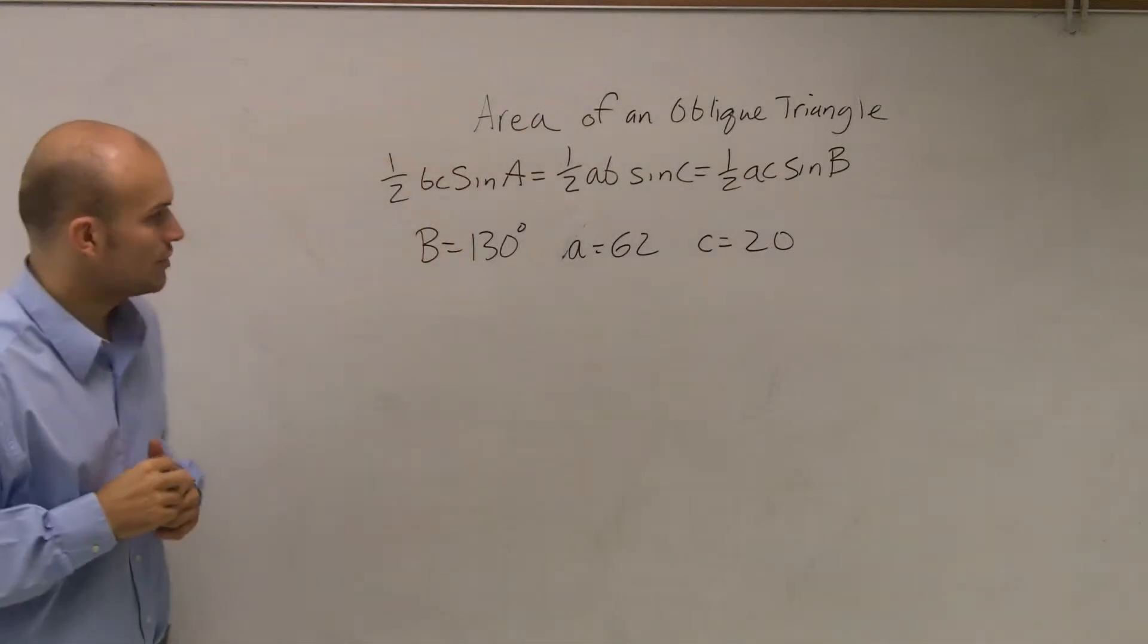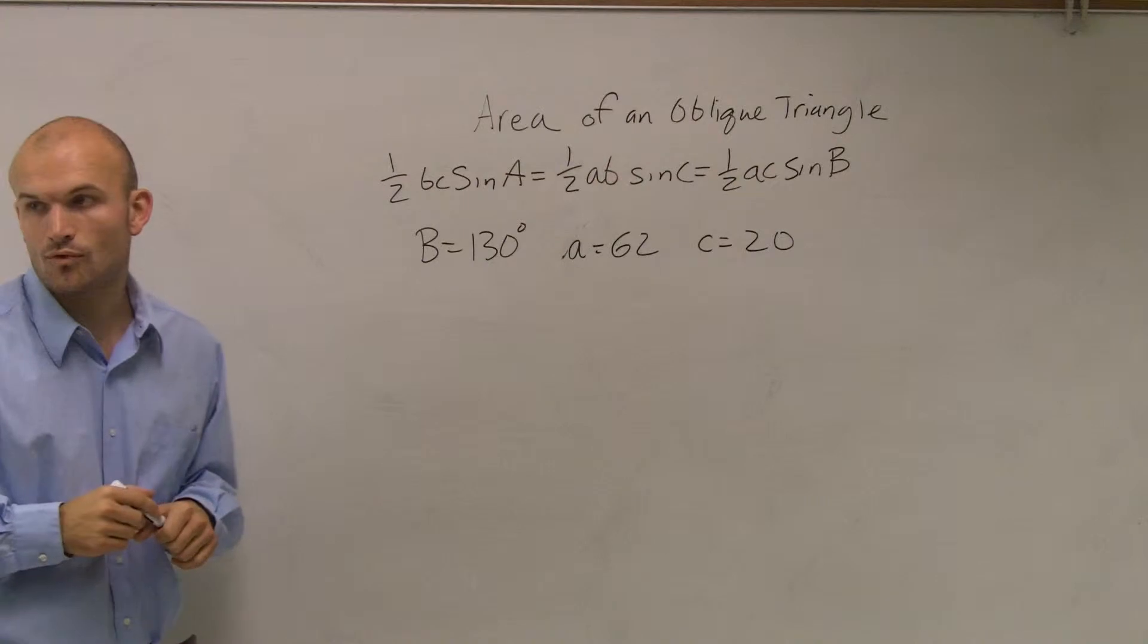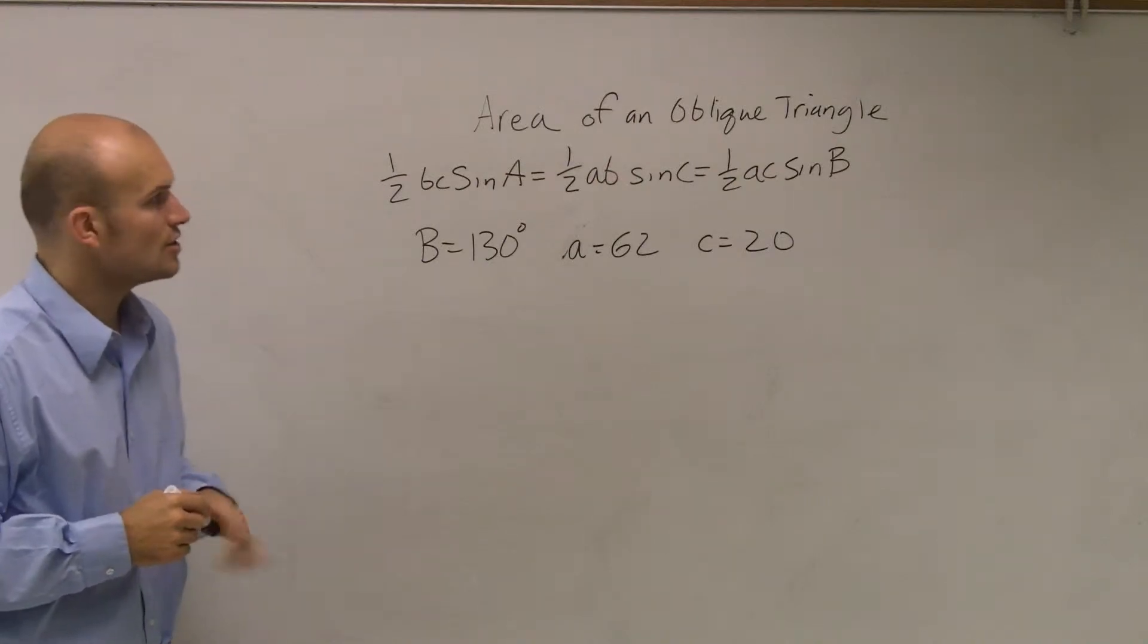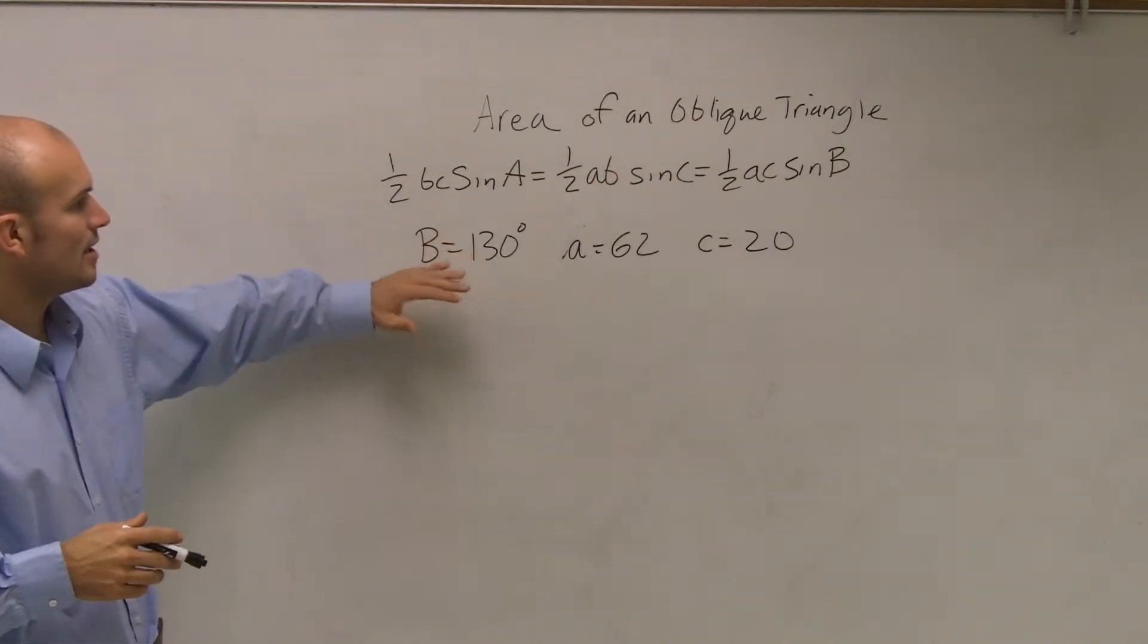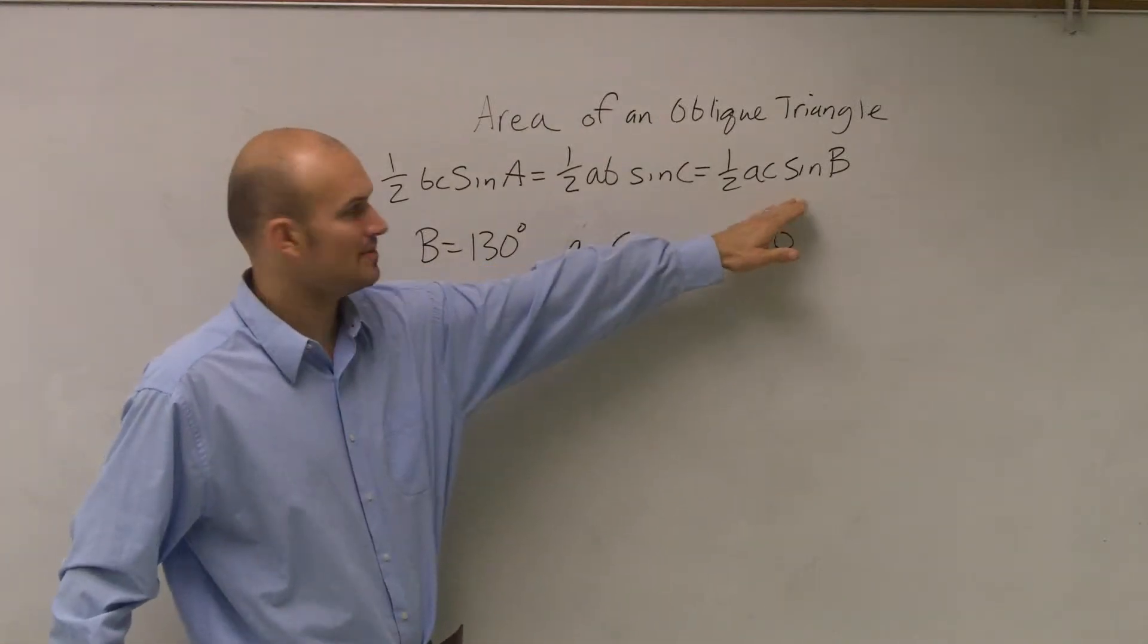So what's given to us for this problem is the angle B, which is 130 degrees, A is 62, and C is 20. So I'm automatically going to look at it and say, all right, well, which one has the information I need? Well, here is sine of B, A, and C.